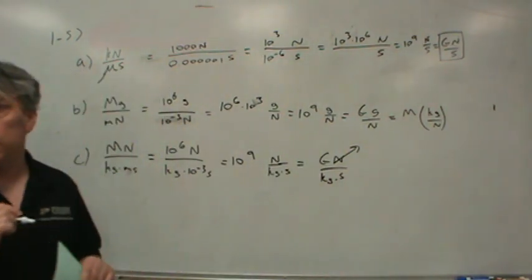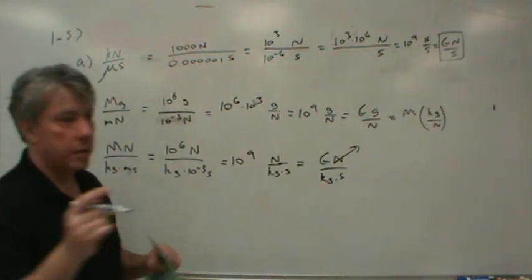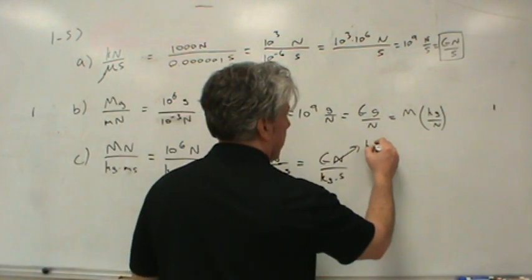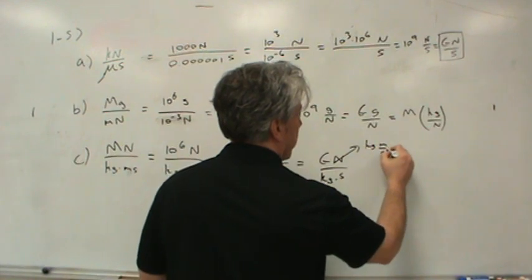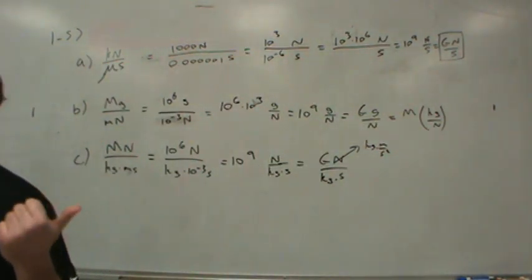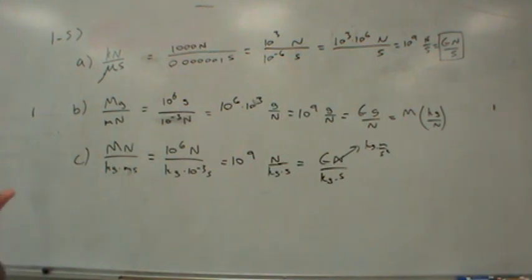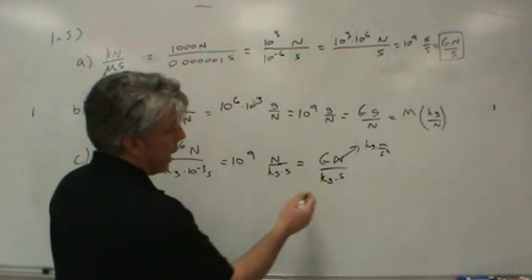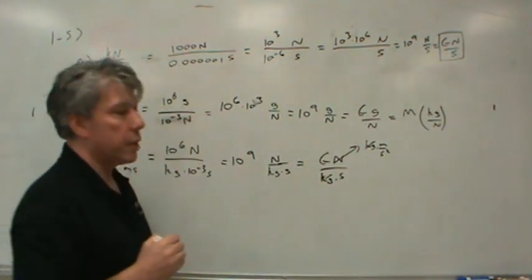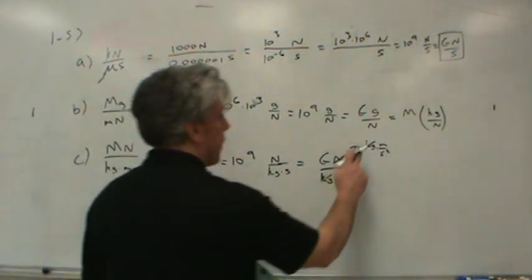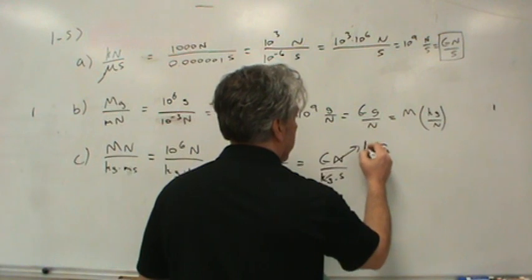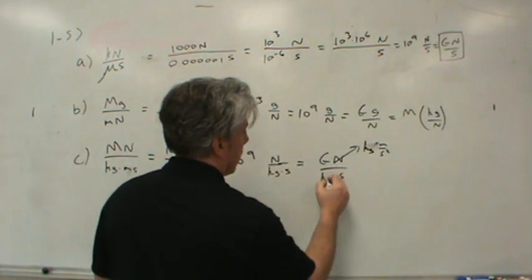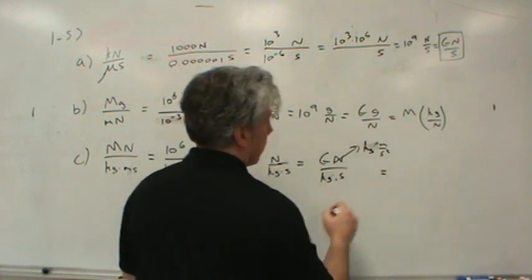But I don't like this. This is what your book gives as the answer. You know why I don't like it? Because I know what a newton is. Do you know what a newton is? It's a kilogram times a meter per second squared. That's right. A kilogram meter per second squared. Remember, I told you this is something you'll probably want to write in the front of your book, so you've got it. We may or may not use it very much in this class, but you'll be happy to know it a little bit later. And then look what happens. Those kilograms cancel.